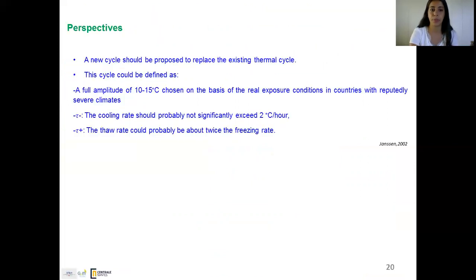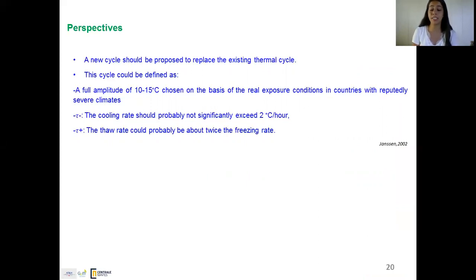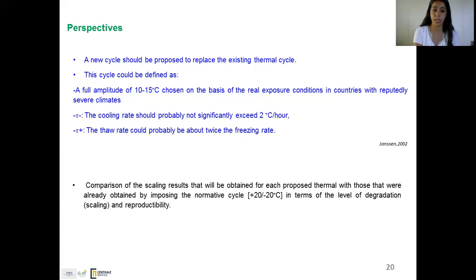As perspectives, a new thermal cycle should be proposed to replace the existing one. This could be defined by a full amplitude of 10–15°C chosen on the basis of real exposure conditions in countries with reputedly severe climates; a cooling rate that should probably not significantly exceed 2°C/hour, otherwise it will be much faster than the real rate; and a thawing rate that should probably not be more than twice the freezing rate. These ideas were also present in the perspectives of Jensen in 2002 at a RILEM conference. We will compare scaling results obtained for each proposed thermal cycle with those obtained using the normative cycle of +20/-20°C, in terms of degradation level, scaling, and reproducibility — an important criterion for normative tests.